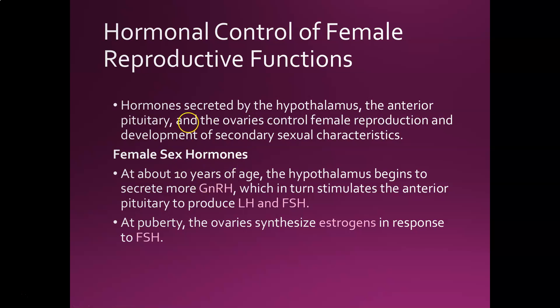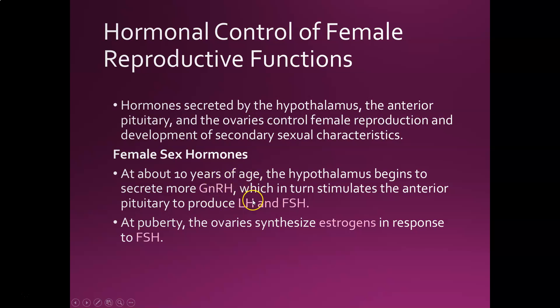The gonadotropins are LH and FSH, which work on your gonads — for females, the ovaries; for males, the testes. Both males and females produce GnRH and release LH and FSH, just with different effects on the gonads. LH is luteinizing hormone and FSH is follicle-stimulating hormone, secreted by the anterior pituitary. GnRH causes a release of LH and FSH, and at puberty under the influence of FSH the ovaries start synthesizing estrogen, which matures the follicles and gives females breast and hip development and female characteristics.